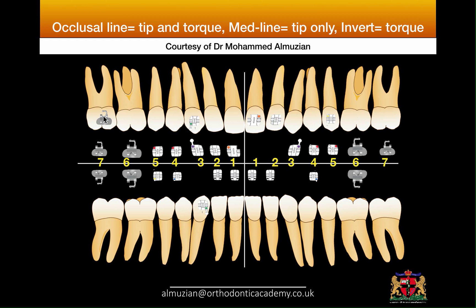In the final scenario, I take the lower left second molar tube and place it on the upper right second molar — crossing the occlusal line, crossing the midline, and inverting the bracket. Crossing the occlusal line changes tip and torque; crossing the midline changes the tip back, canceling it; inverting changes the torque back, canceling it. At the end, there is no change in tip or torque — the bracket prescription stays as it is. I hope this clarifies some confusion, and thank you for watching.